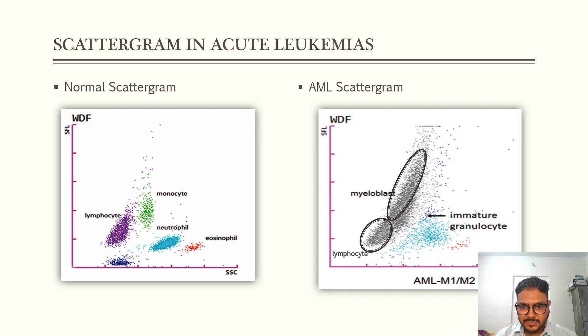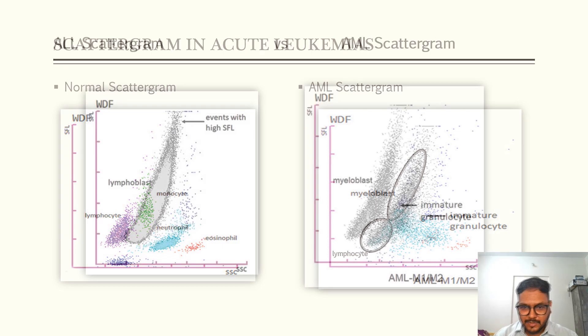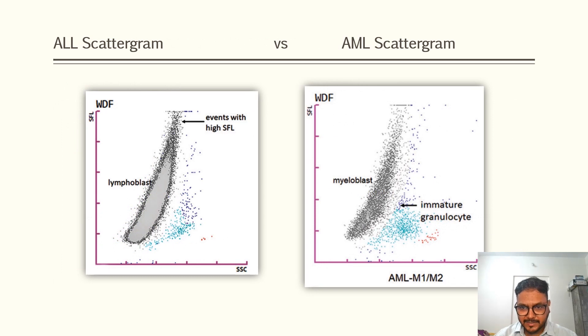Now you must be confused that what is the difference between ALL and AML. The membrane of the myeloblast is less permeable compared to that of the lymphoblast. That is why lymphoblast show events with high SFL whereas myeloblast don't. So this is the difference by which we can understand.